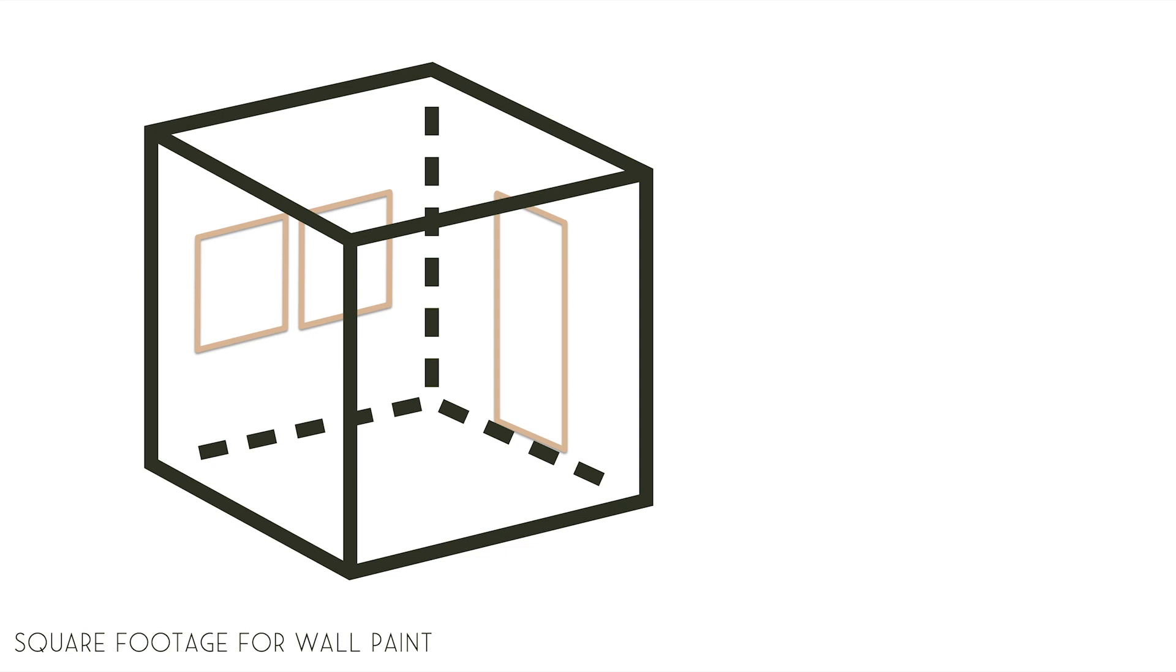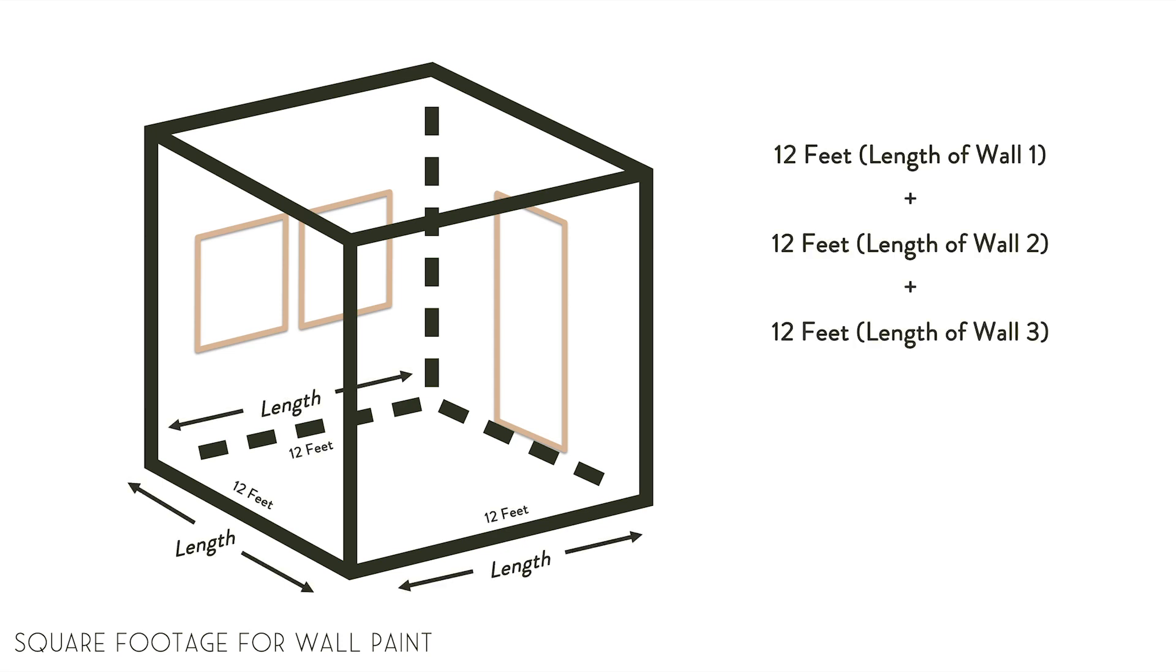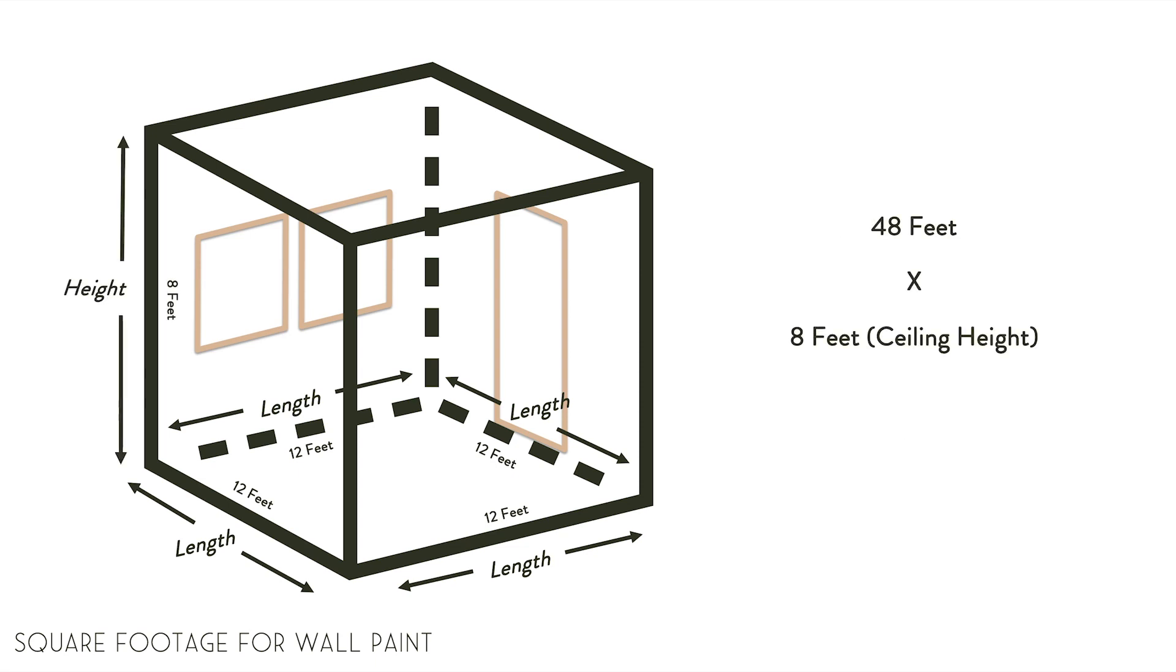In our example, we have four walls that are each 12 feet long. So we'd add 12 plus 12 plus 12 plus 12, which equals 48 feet. Then we'd multiply that number by the height of the room, which is 8 feet, giving us a total of 384 square feet.